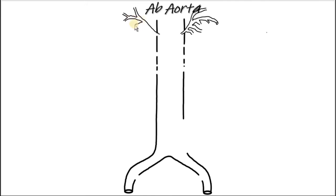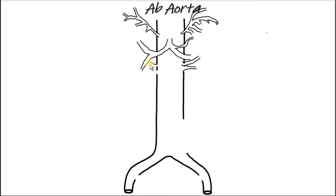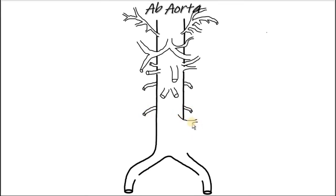The abdominal aorta begins at the aortic hiatus of the diaphragm at the level of the twelfth thoracic vertebra. It gives rise to the lumbar and musculophrenic arteries, renal and medial suprarenal arteries, and visceral arteries including the celiac trunk, superior mesenteric arteries, and inferior mesenteric arteries. It ends at the bifurcation into the left and right common iliac arteries. At the point of bifurcation, there also springs a smaller branch, the median sacral artery.